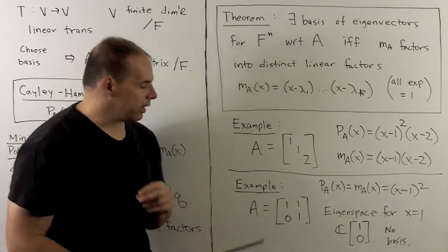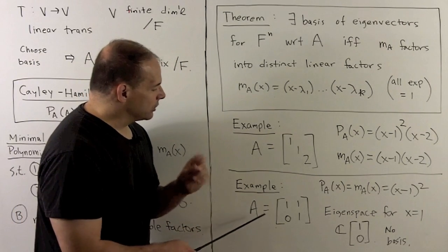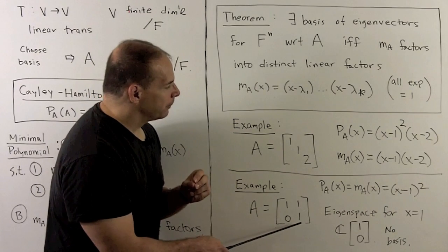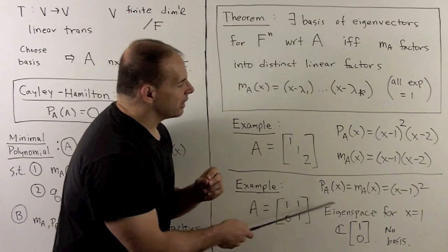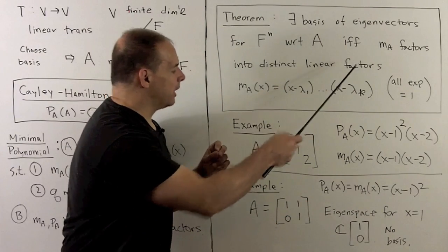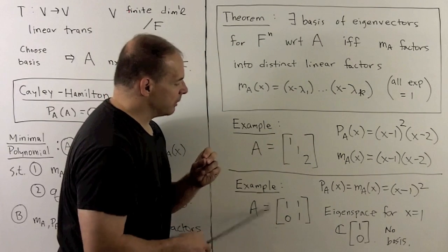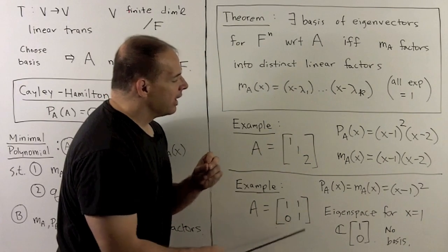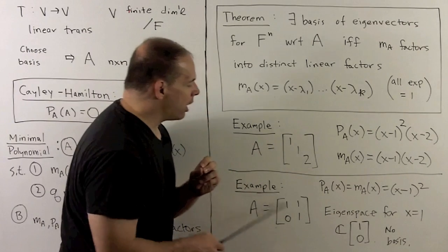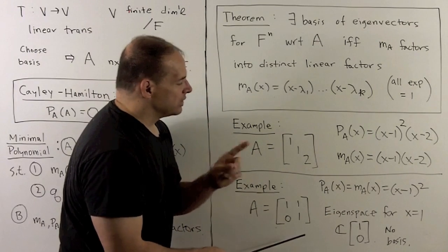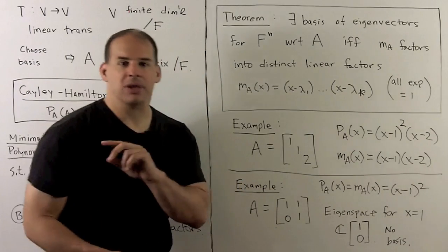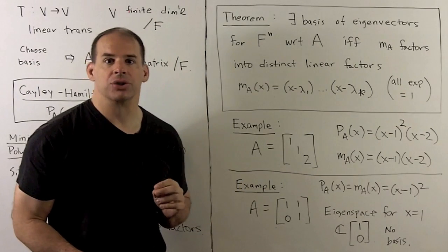On the other hand, if we take A equal to the Jordan block with entries one, one, zero, one, the characteristic and minimal polynomials are equal. So our theorem doesn't apply here — this matrix is not diagonalizable. If we look for the eigenspace for eigenvalue one, we see it is only one-dimensional, so there won't be a basis of eigenvectors.